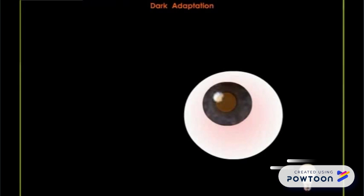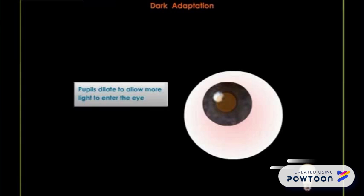Dark adaptation: A person entering a dark room from a bright one is initially blinded. Gradually, the objects are seen in outline and then in detail. This is called dark adaptation. Here, the pupil dilates to allow more light to enter the eyes.